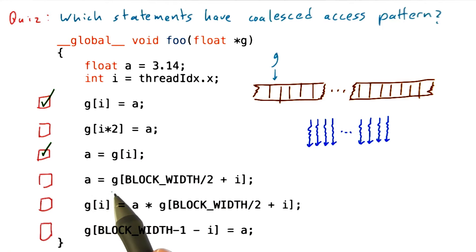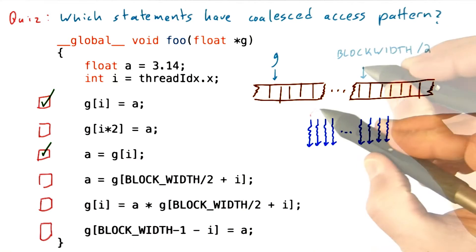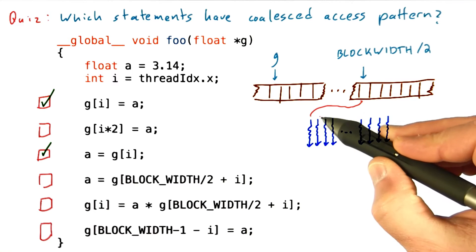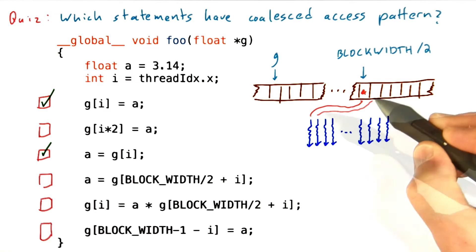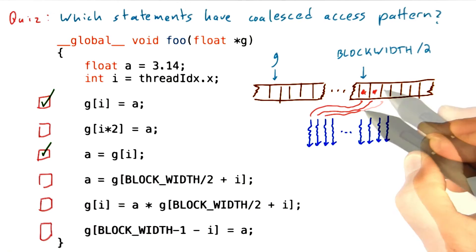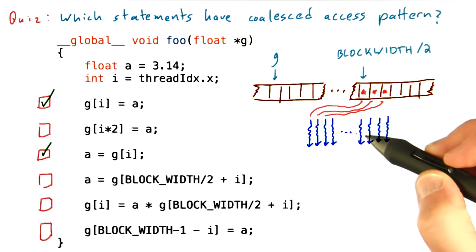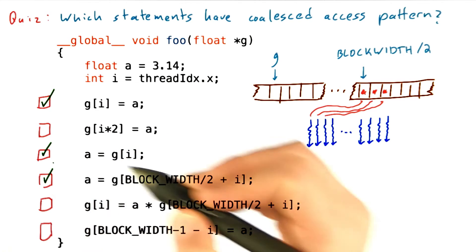This next example is coalesced because every thread is reading from a location defined by g plus some offset, block width over 2, plus the thread's index. So if this is block width over 2, then every thread will be accessing adjacent locations starting at that offset. So this is coalesced.